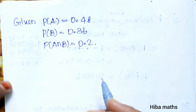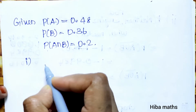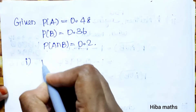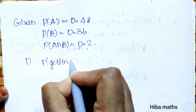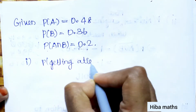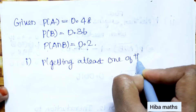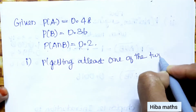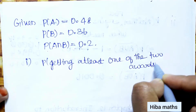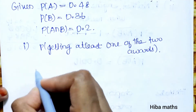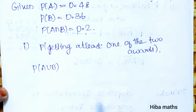For the first condition — at least one of the two awards — we need P(A∪B). To find P(A∪B), we use the union formula: P(A) + P(B) − P(A∩B).